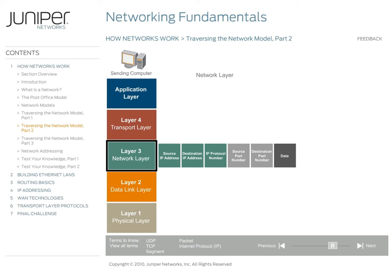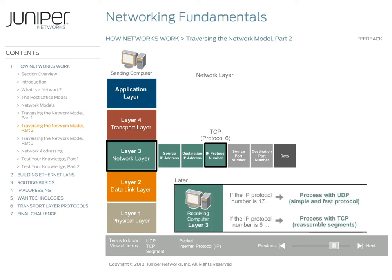When you send an email, the sending computer uses TCP as its transport layer protocol. When the sending computer adds the layer 3 header to the data, it identifies the IP protocol number as 6. When the receiving computer unwraps the data layer by layer, the network layer examines this IP protocol number to determine which upper layer protocol should process the data next. Because in this example the IP protocol number is set to 6, the network layer on the receiving computer sends the data to the TCP protocol for further processing.